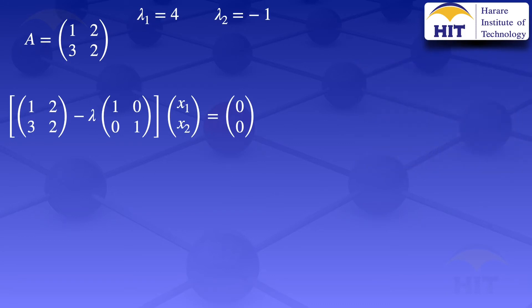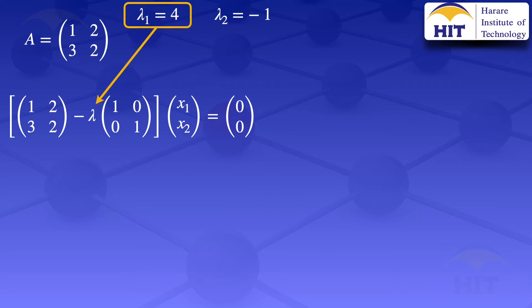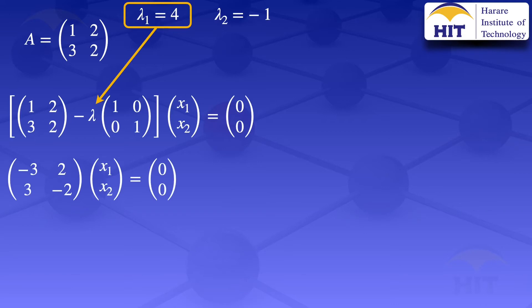We look at the first eigenvalue, lambda 1 equals 4, and substitute it into the formula. Putting lambda equals 4 results in multiplying the identity matrix by 4, so 4 is on the diagonal, and we subtract that from the given matrix A. This gives us 1 minus 4 equals minus 3, and 2 minus 4 equals minus 2 on the diagonal. The equation then becomes the matrix [[-3, 2],[3, -2]] multiplied by vector x equals the zero-vector.